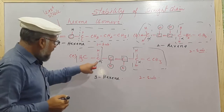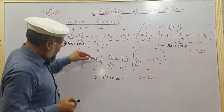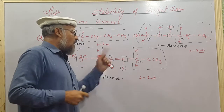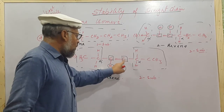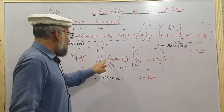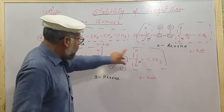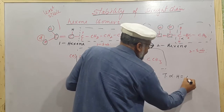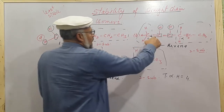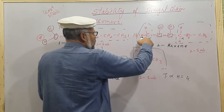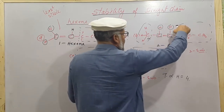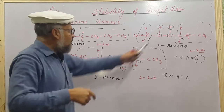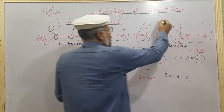For hex-2-ene, the alpha carbon on one side has two hydrogens, and the alpha carbon on the other side also has two hydrogens — giving a total of four alpha hydrogens. For hex-3-ene, one alpha carbon has three hydrogens and the other has two hydrogens, giving a total of five alpha hydrogens. Since hex-3-ene has more alpha hydrogens, it is more stable than hex-2-ene.